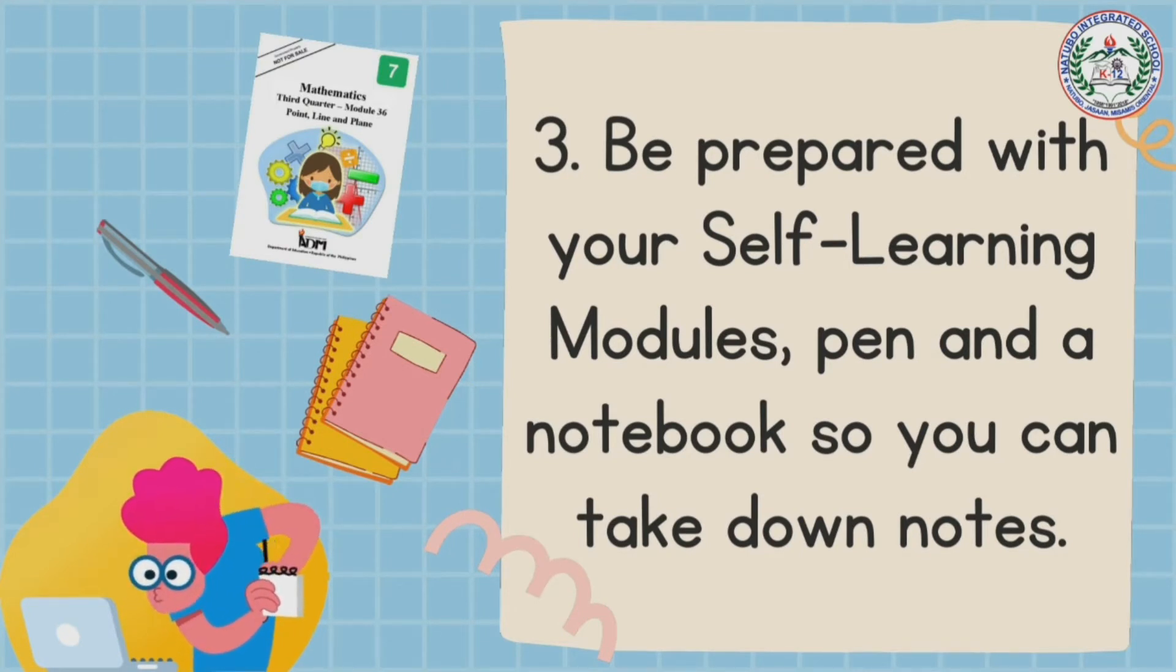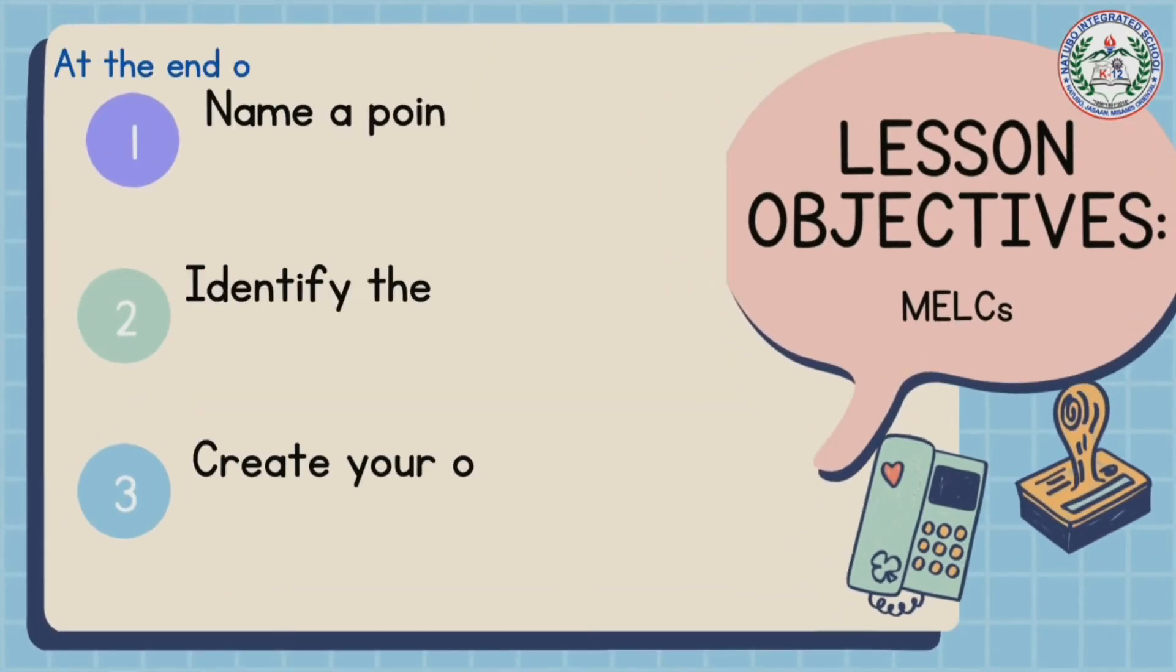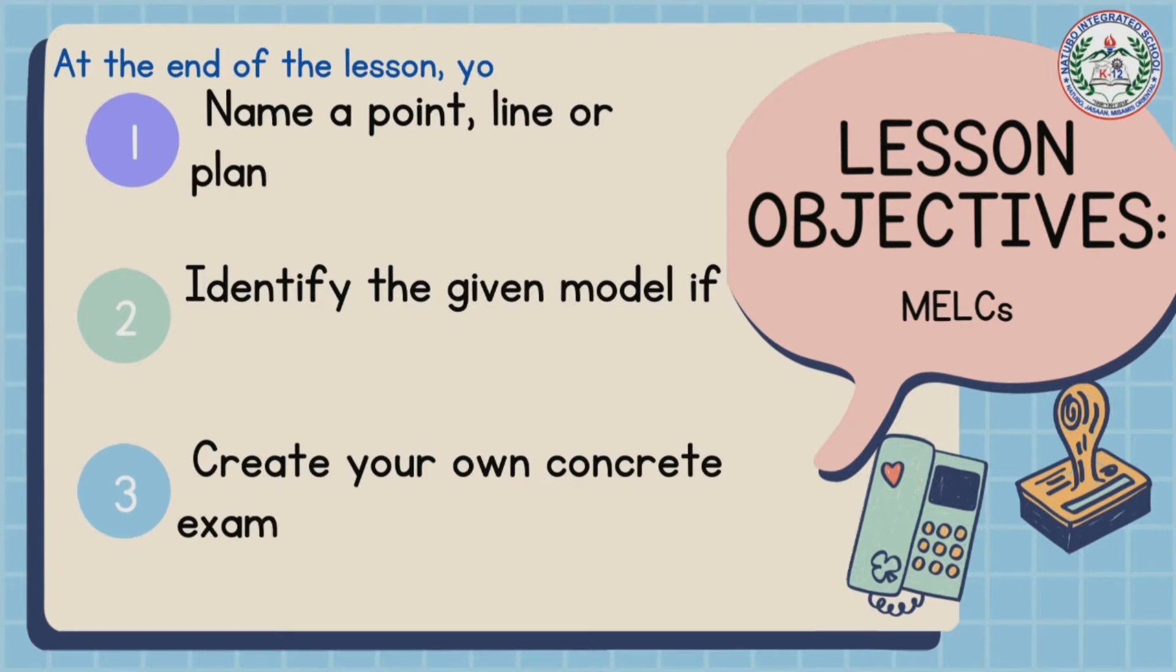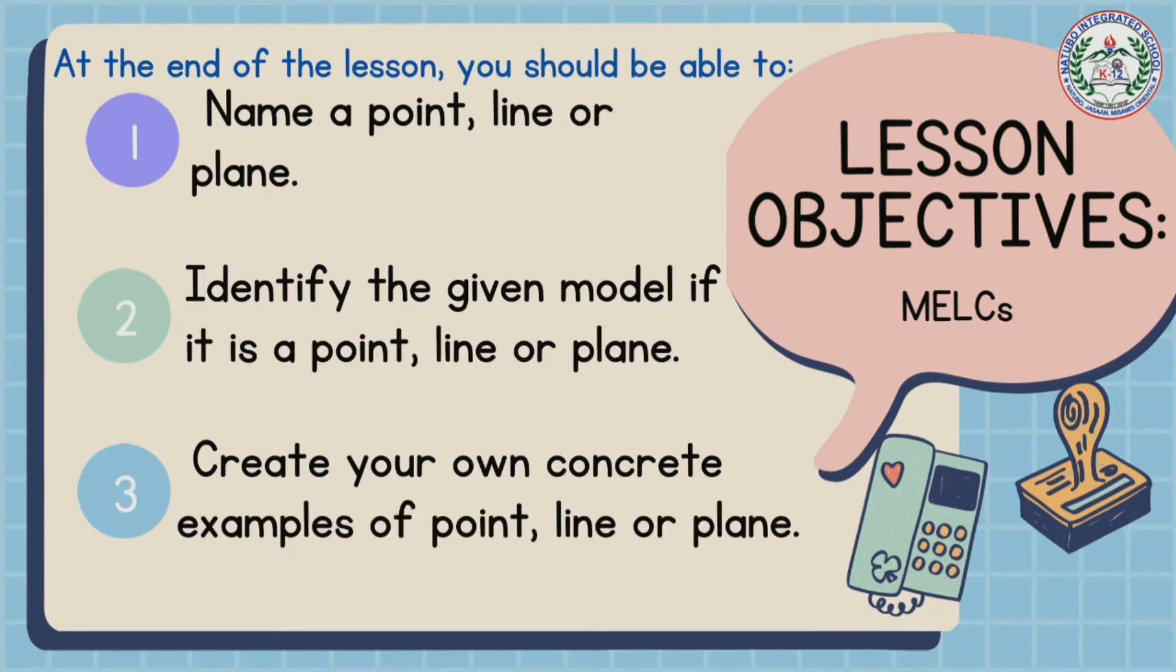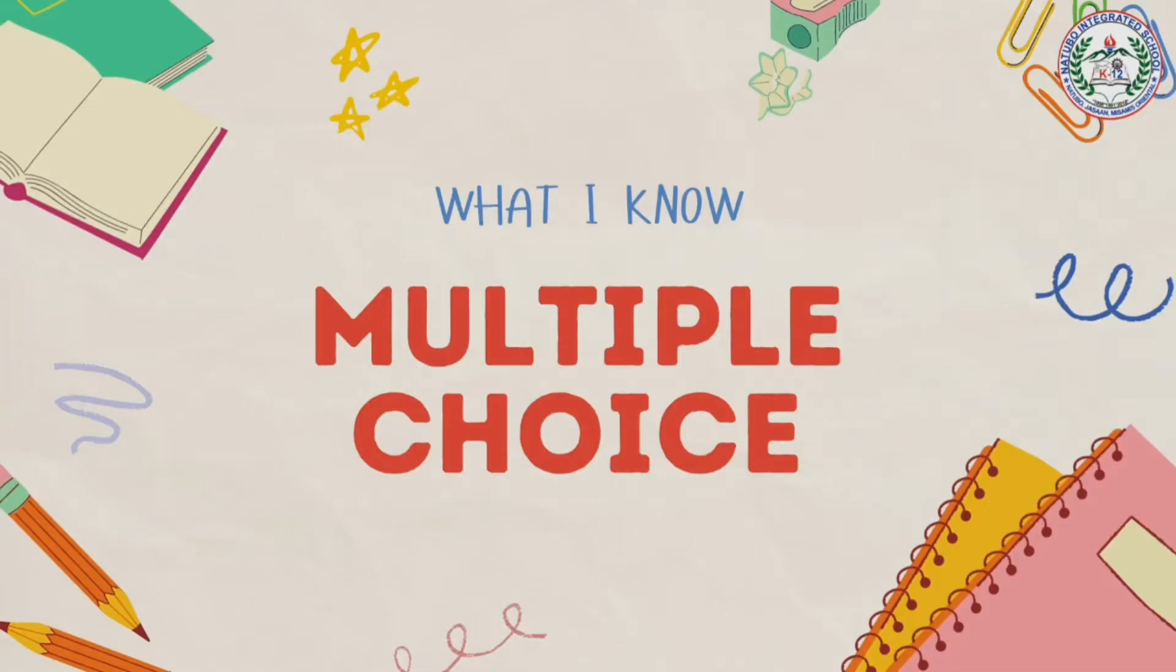Third, be prepared with your self-learning module, pen, and a notebook so you can take down notes. To begin with, here are our lesson objectives. At the end of the lesson you should be able to: one, name a point, a line or plane; two, identify the given model if it is a point, line or plane; and three, create your own concrete examples of point, line or plane.